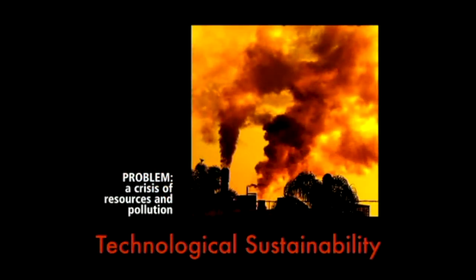Mark and I have been thinking about climate change from four different perspectives, and we're going to take these tonight one at a time. The first is the technological sustainability aspect — this is how most people think of climate change. It's a problem of resources and pollution, which is only partially true. We obviously can't have resources forever and ever — we have to manage them intelligently, or we'll wind up in collapse, like some of the cultures I studied as an anthropologist.